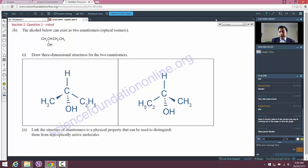It says then at the end: link the structure of enantiomers to a physical property that can be used to distinguish them from non-optically active molecules. The reason I want to go through these sorts of things is something to do with examination technique.